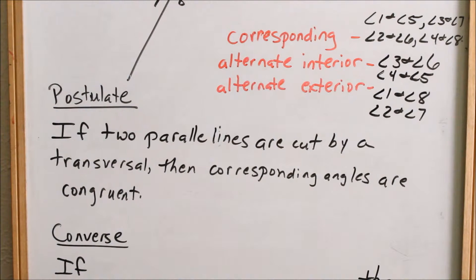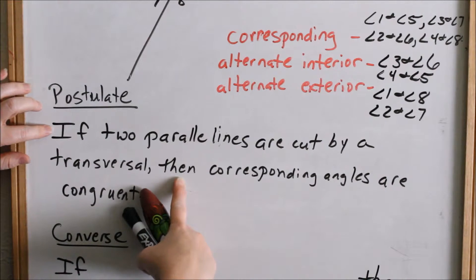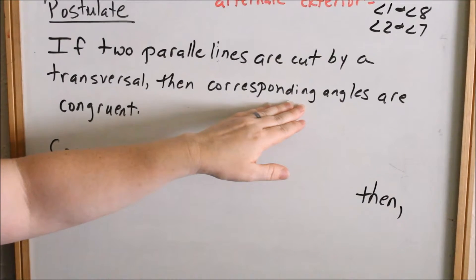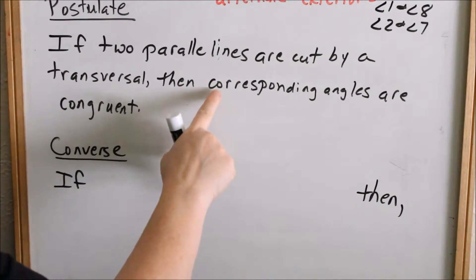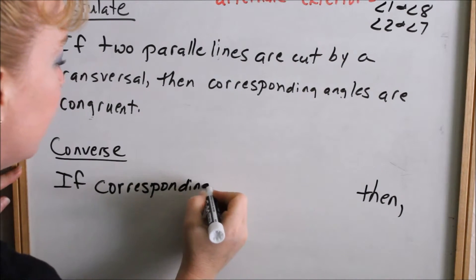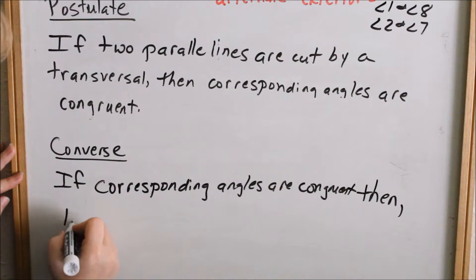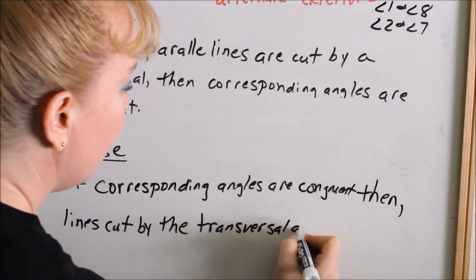Every postulate has a converse. If you notice, we have an if-then statement — if something, then something. We are proving something: if two parallel lines are cut by a transversal, then corresponding angles are congruent. The converse just reverses it — you say the last part first and the first part last. So the converse is: if corresponding angles are congruent, then the lines cut by the transversal are parallel.